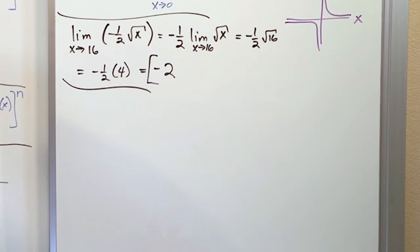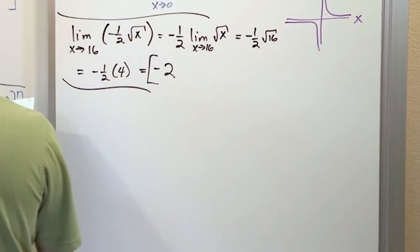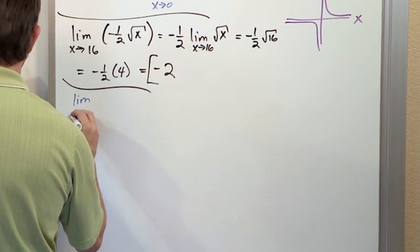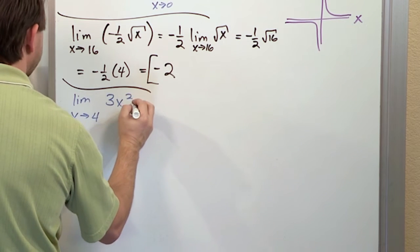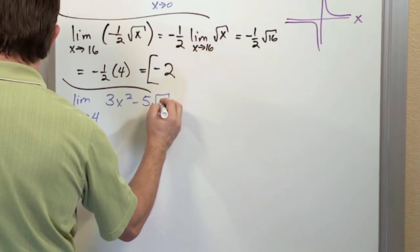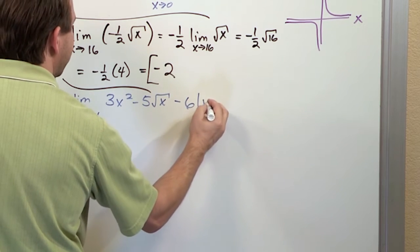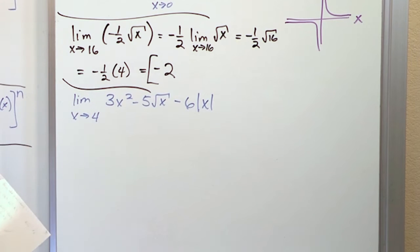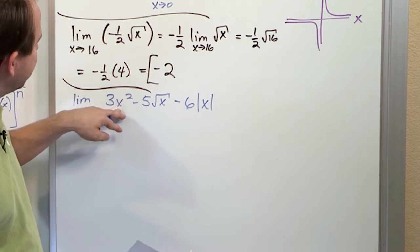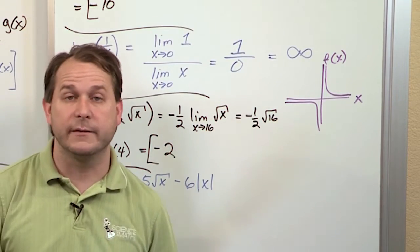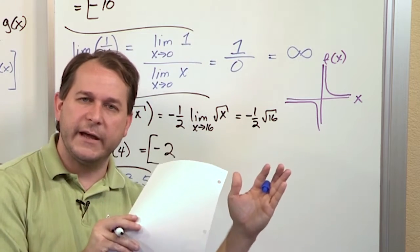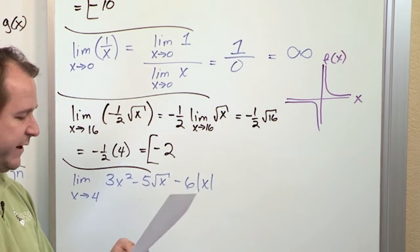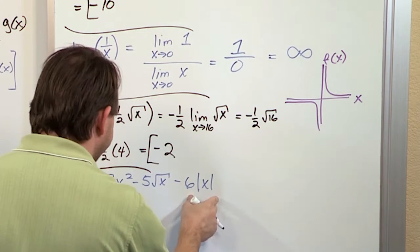What if you have the limit as x approaches 4 of 3x squared minus 5 times the square root of x minus 6 times the absolute value of x? It's the same sort of thing — you have a function here, a function here, and a function here, and they are subtracted. So I can take the limit of each individual thing separately. That's the key point: I can take the limit of this, the limit of this, and the limit of this.